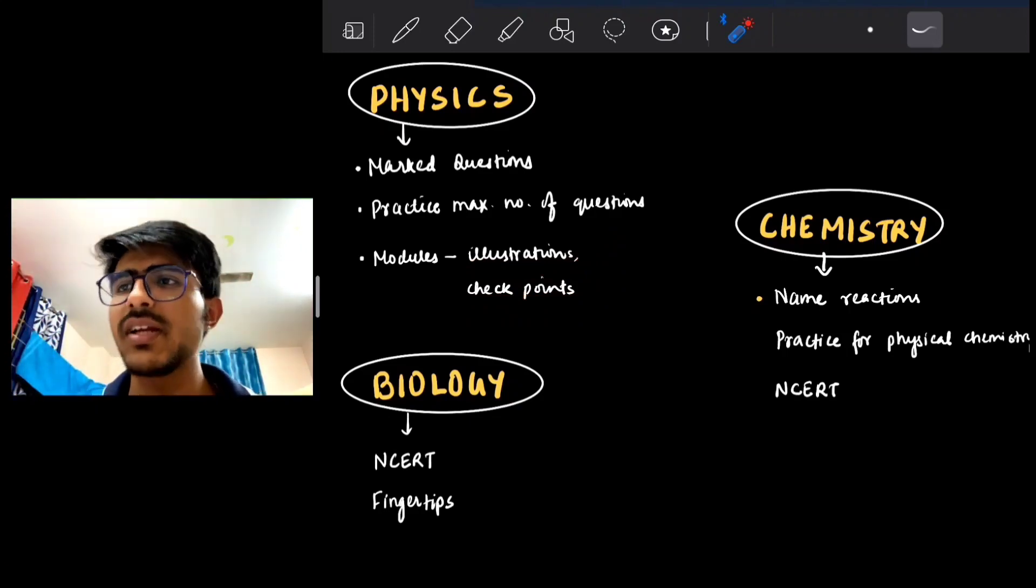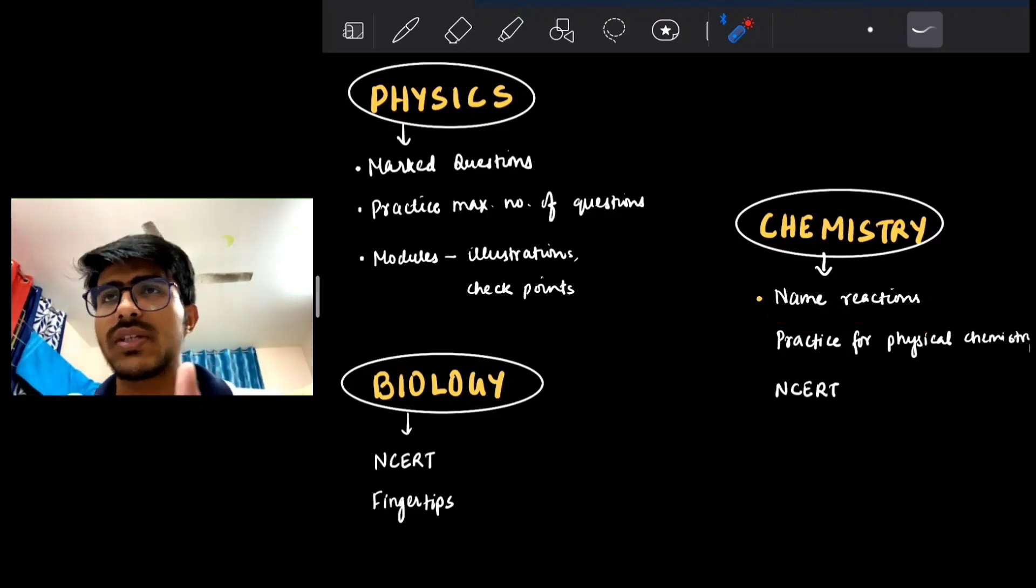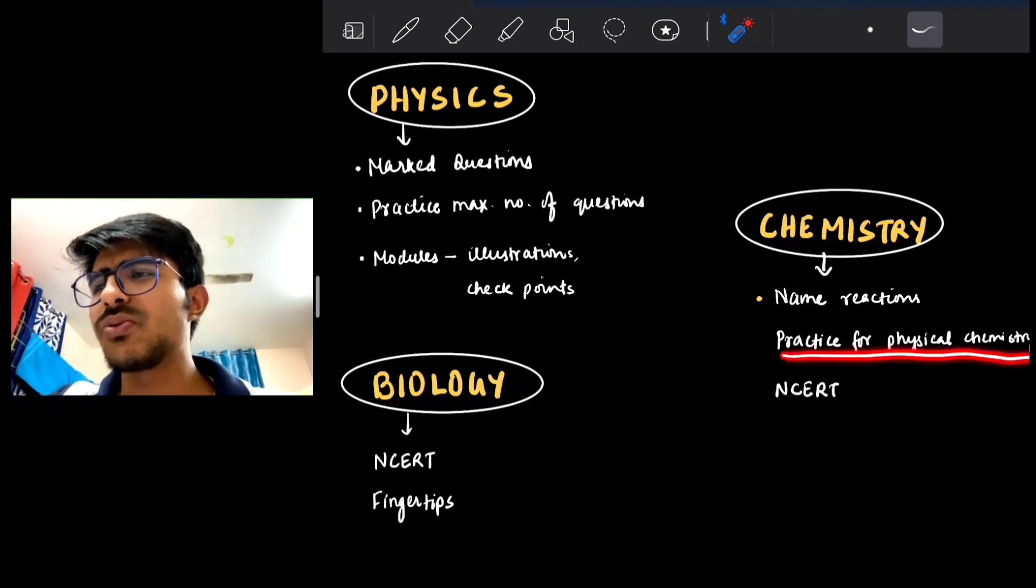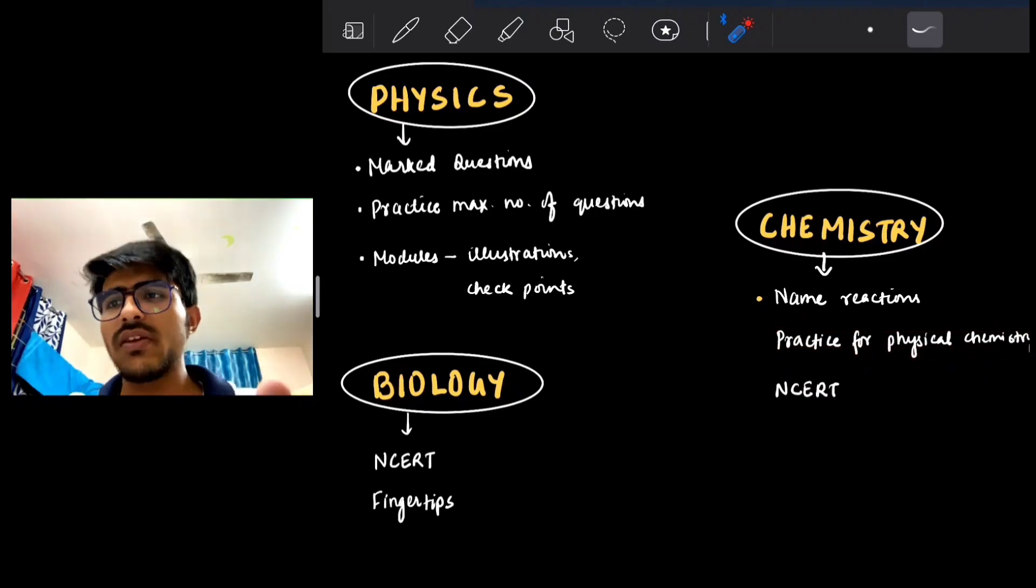For chemistry, in organic chemistry, revise name reactions very frequently, or you can make short notes. For physical chemistry, you need to do the same as physics. Physical chemistry has some theoretical chapters where short notes will work a lot. Then comes your NCERT. For inorganic chemistry, just like biology, go through every point of your NCERT book—any question can come from it. NCERT has a lot of practice questions, so just complete your NCERT anyhow.